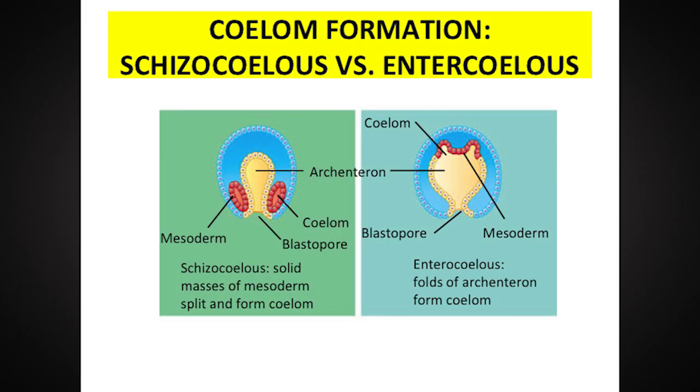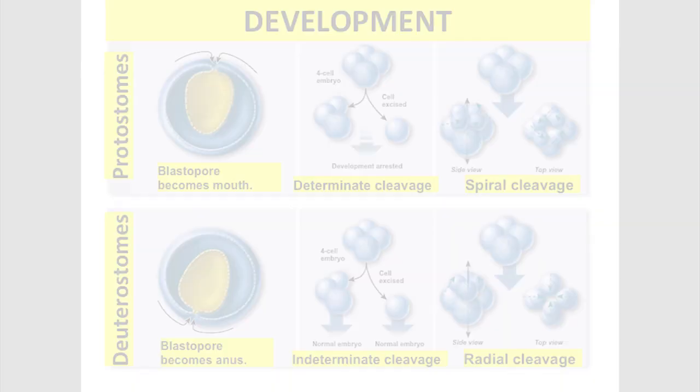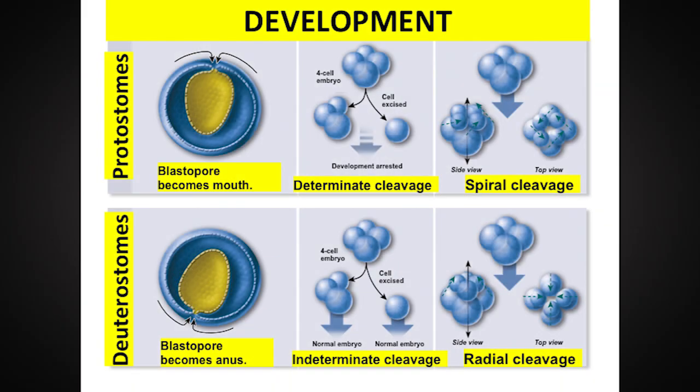In protostomes, coelom formation comes from splitting mesoderm, called schizocoelous coelom formation — say that fast five times! Think of slicing the top of a pita. In contrast, the coelom in deuterostomes originates from folding — think of it as a pita that you fold over, or even a calzone with sealed edges. Besides coelom formation, you need to know the other differences between protostomes and deuterostomes. Proto means early or first, and deutero means second; stome refers to mouth. So: protostome means first mouth, deuterostome means second mouth. Several developmental differences exist between protostomes and deuterostomes, including the fate of the blastopore and the type of cleavage.